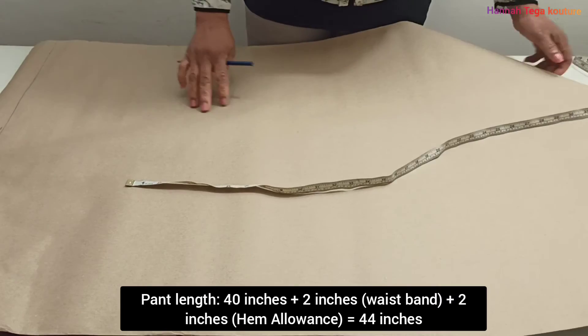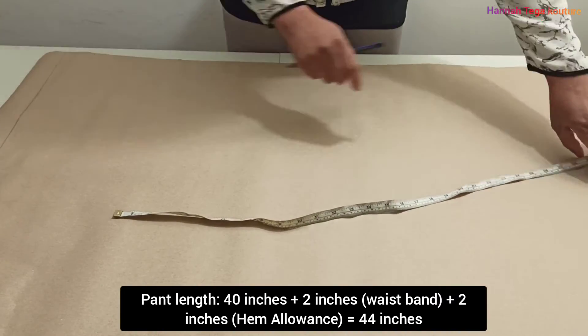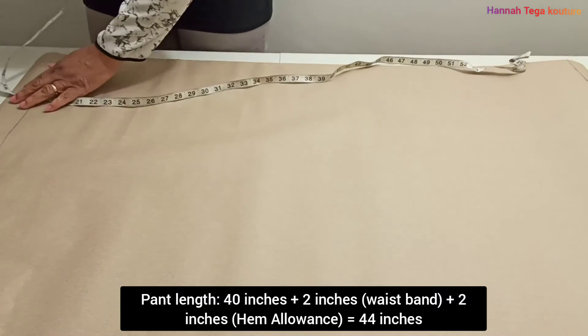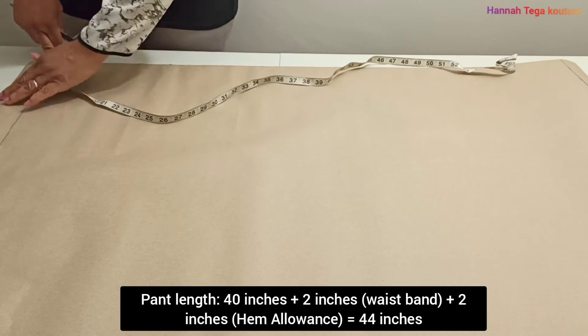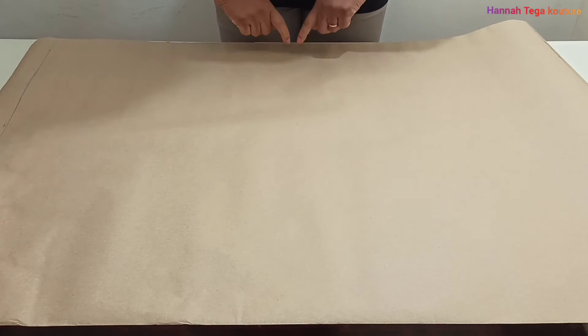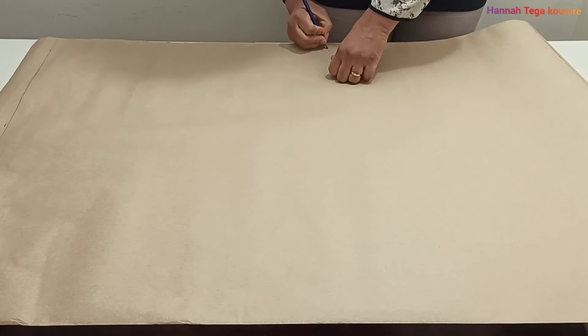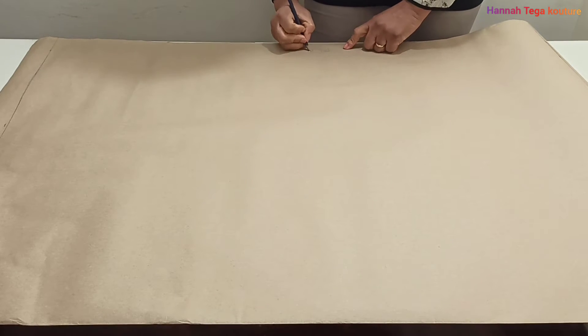If your pant length is the same as this, you want to follow the same, but if it's longer or shorter, you want to work according to the pant length you've got. At this stage you don't want to forget the place unfold. Take your pen or pencil and write your place unfold, so you don't cut your fabric accidentally. This is a no side seam pant.